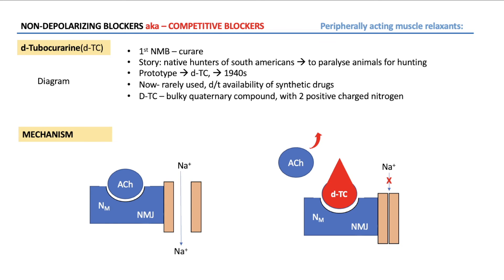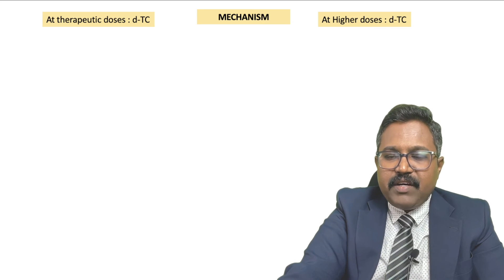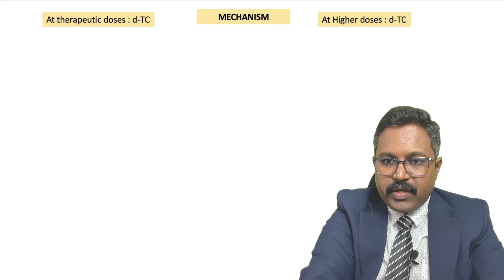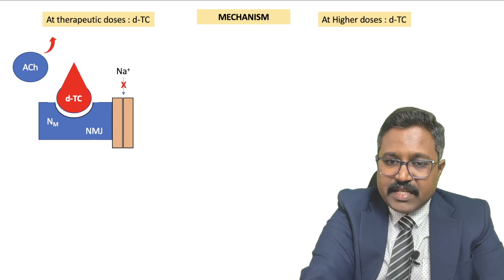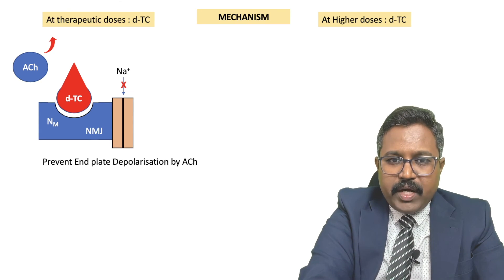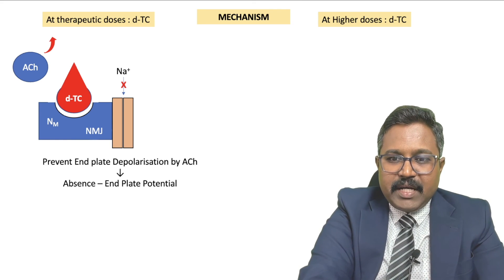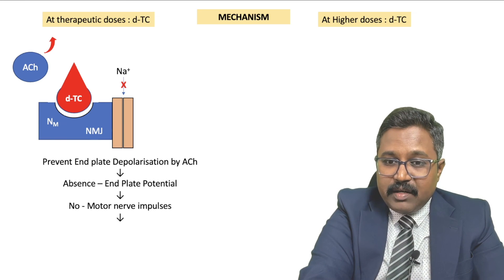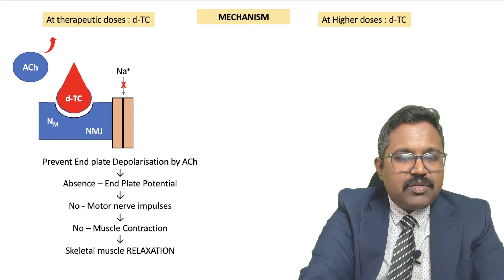At therapeutic doses of D-tubocurarin, the drug attaches to the NM receptors at the motor end plate on the postsynaptic membrane, preventing sodium channel opening. Sodium influx does not occur, preventing end plate depolarization that would normally be caused by acetylcholine. Thereby there is absence of end plate potential, no motor nerve impulse, no muscle action potential, and no muscle contraction — finally leading to skeletal muscle relaxation.